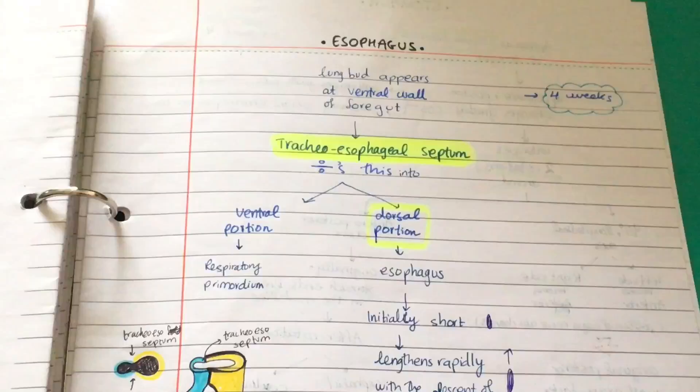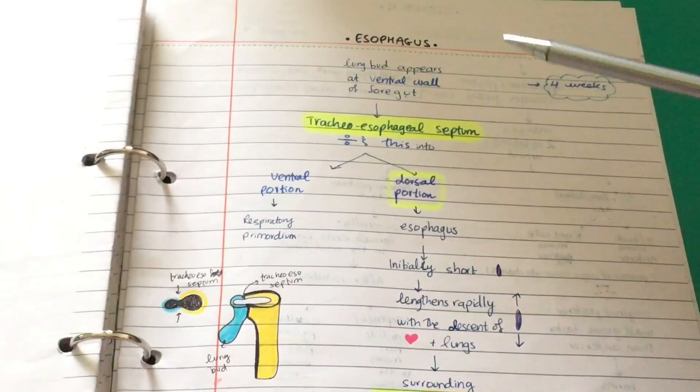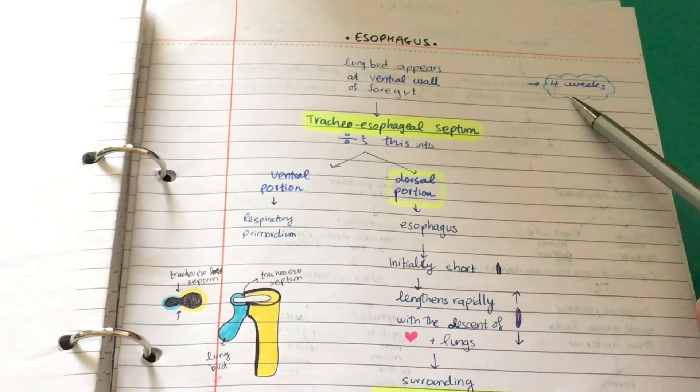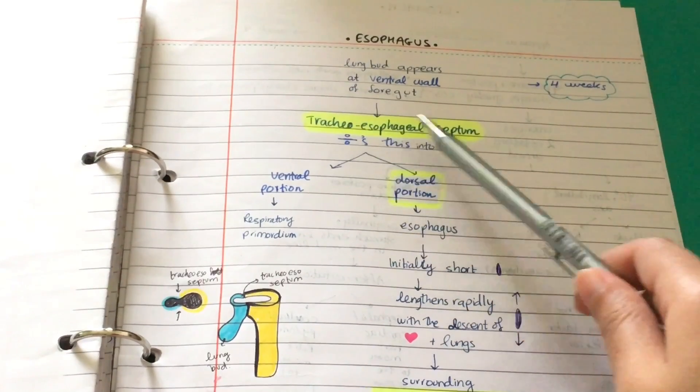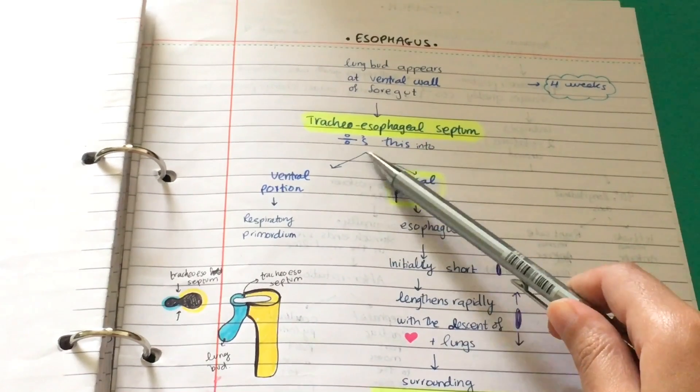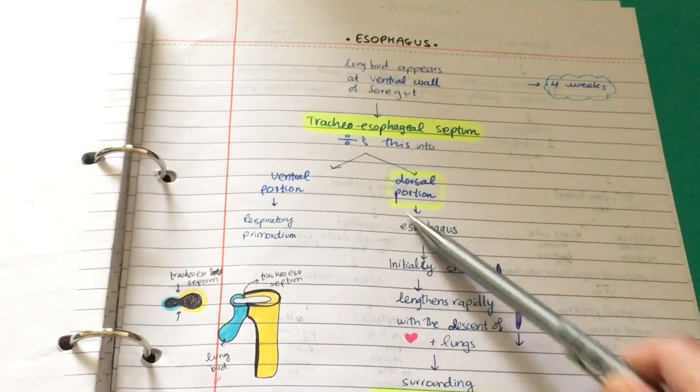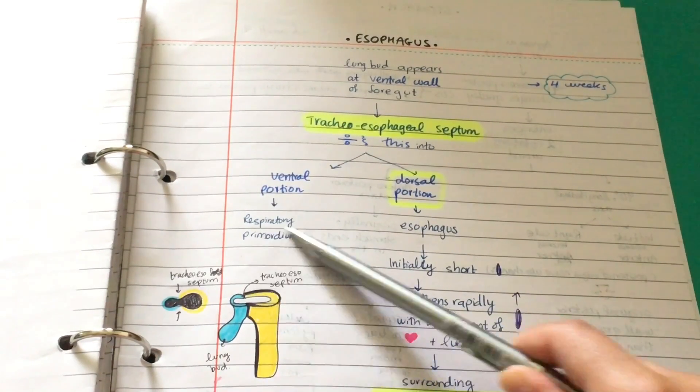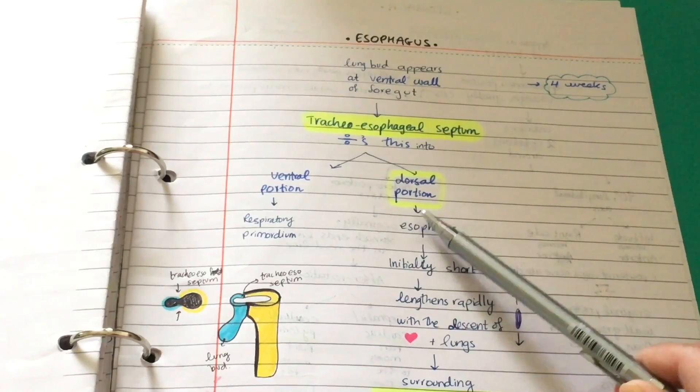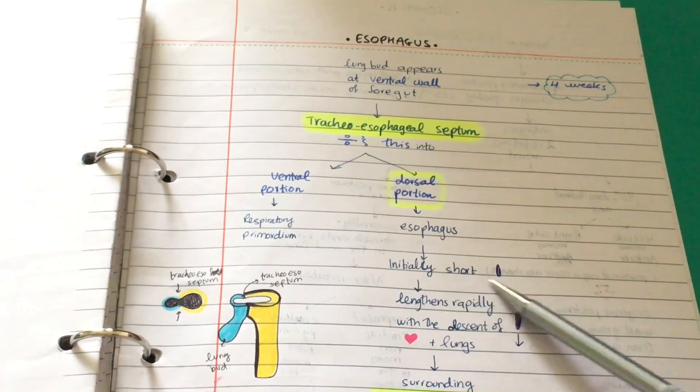At about four weeks, the lung bud appears at the ventral wall of the foregut, and the tracheoesophageal septum divides this into two parts: a ventral portion and a dorsal portion. The ventral portion forms the respiratory primordium, and the dorsal portion forms the esophagus, which is initially very short.